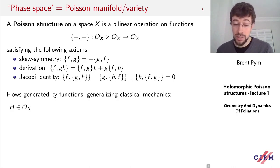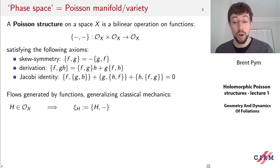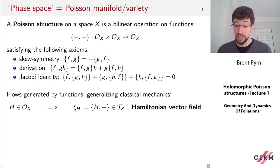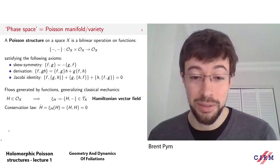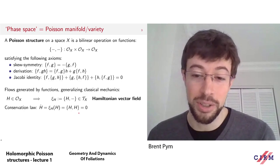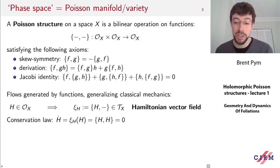Whenever we have a Poisson structure on a space X, we can generate a flow using a function just like in classical mechanics. If I take a function h on X and look at the operation of taking the bracket with h, by the second axiom that is a derivation of functions. Derivations of functions are the same as vector fields, so I can think of this as defining a vector field on X — called the Hamiltonian vector field. Once again, we have the conservation law that the value of h along the flow of its Hamiltonian vector field is constant because of the skew-symmetry of the bracket.